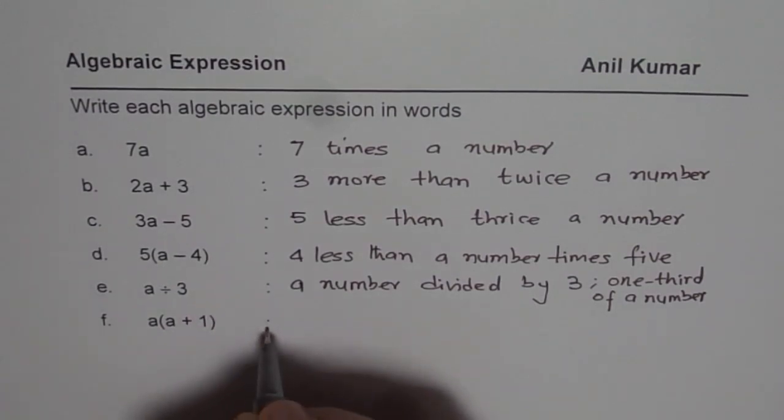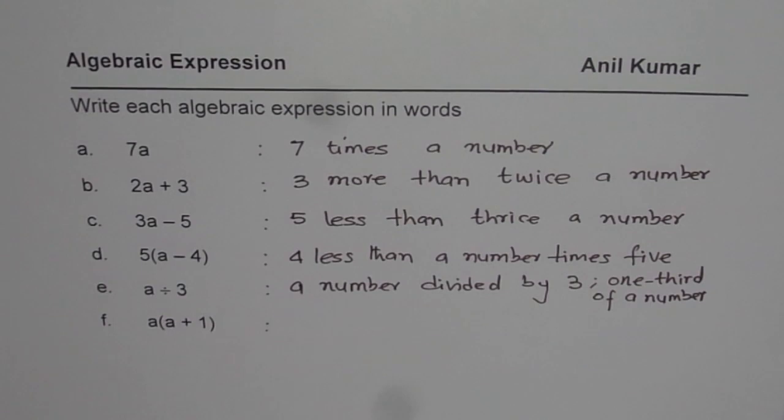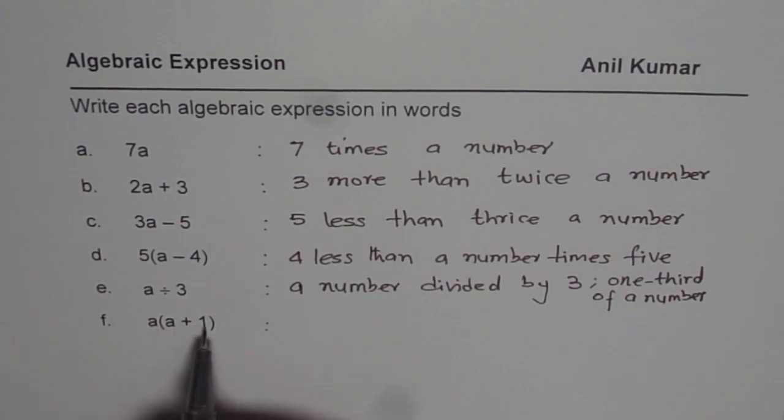Now the last one is for you to do. Think about it. We have now the variable is just 1, a and a plus 1. So how should I write? So I could say 1 more than a number times itself, or 1 more than the number times the number itself.